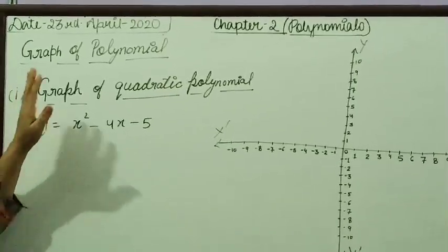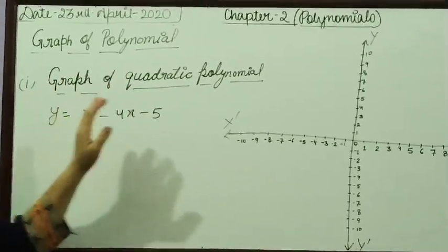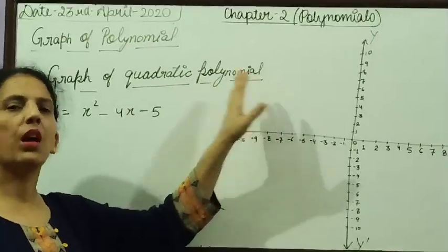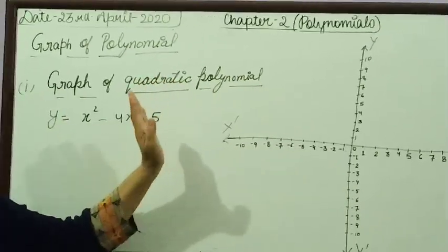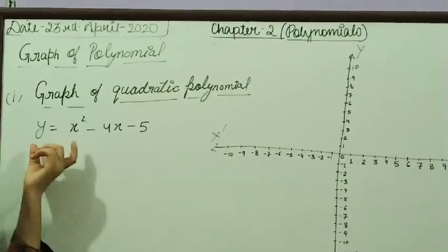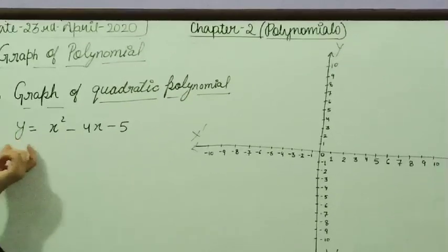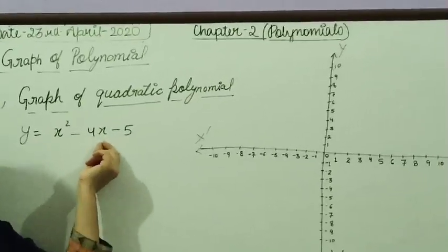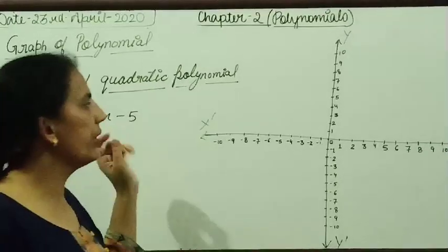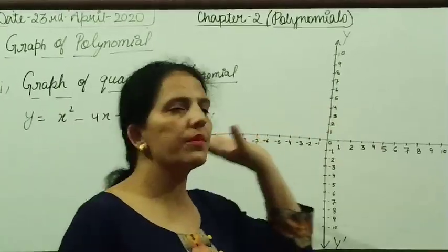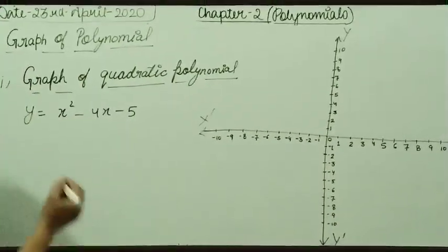Now, in graph of polynomial, our second part is graph of quadratic polynomial. How to plot graph of quadratic polynomial? We are considering one quadratic polynomial as y is equal to x square minus 4x minus 5. And now we will plot this graph on this quadrant. So, let's start.